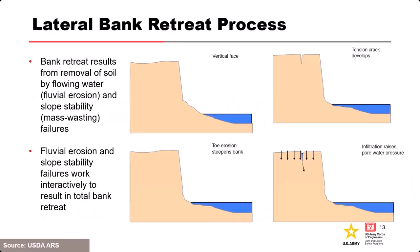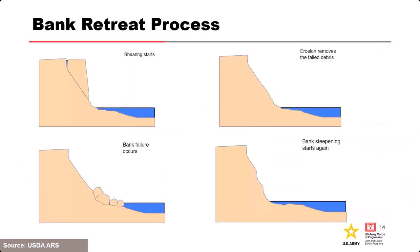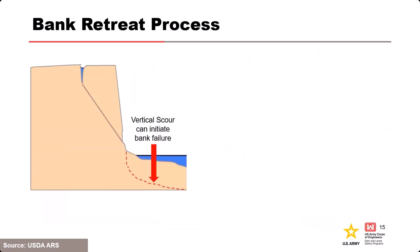The lateral bank retreat cycle: flowing water removes material from the toe of the bank, oversteepens the bank, a tension crack and filtration develops, shearing starts, and bank failure occurs. The erosion then removes the failed debris and the cycle starts again. Keep in mind that a combination of vertical scour and lateral bank retreat can exacerbate oversteepening of the toe as well.